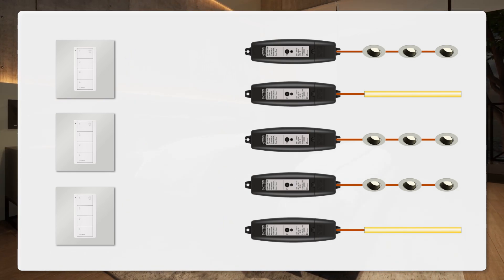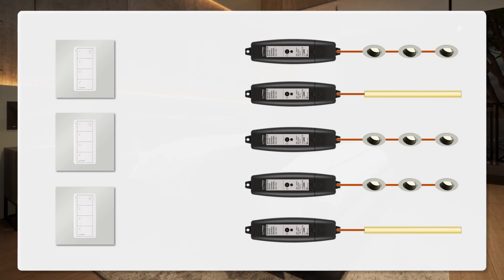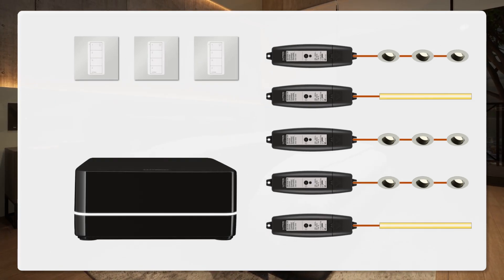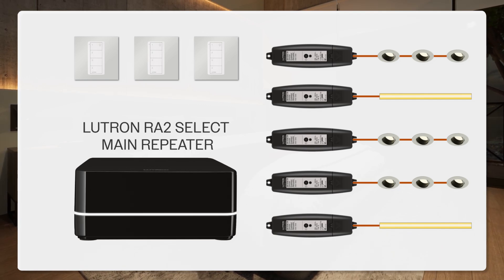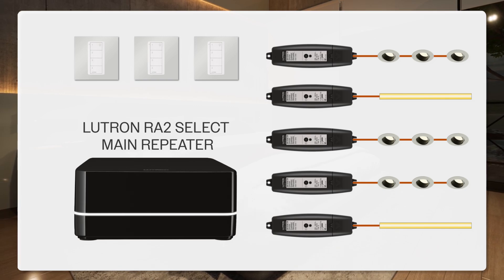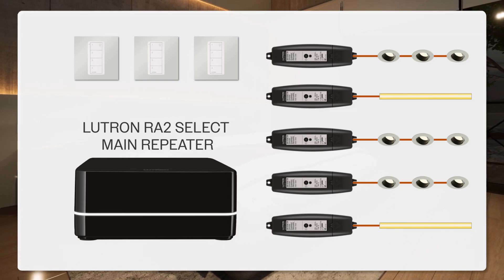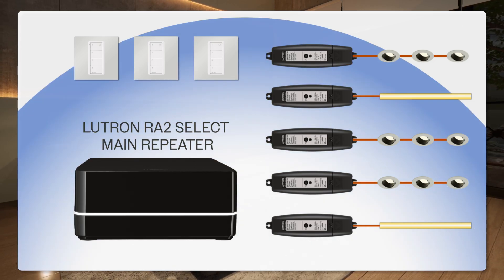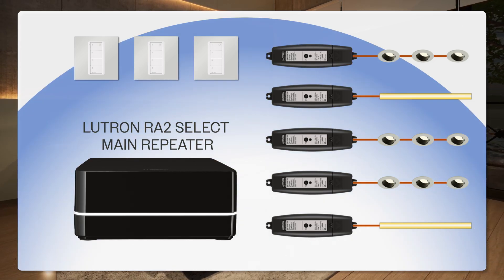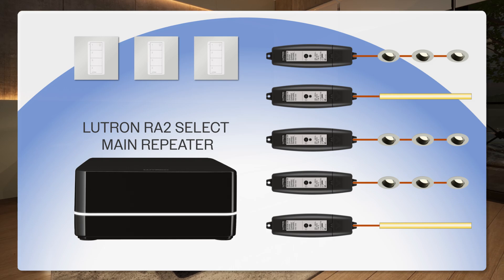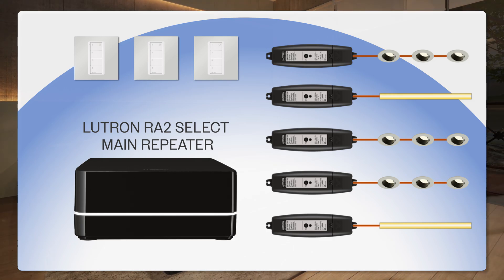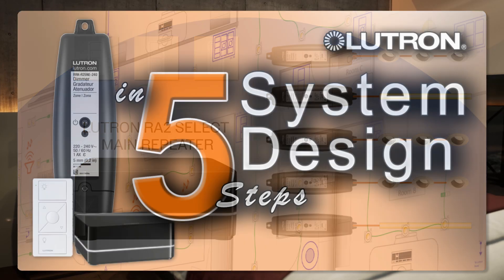The communication of this entire Lutron RA2 Select system is orchestrated via the Lutron RA2 Select main repeater. You need one main repeater per RA2 Select system, which can control up to 99 Lutron wireless devices within a radius of 9 metres — which is ideal to control multiple rooms. And if you need more information on how to design an RA2 Select system for an entire house, you can refer to this tutorial available on my channel.